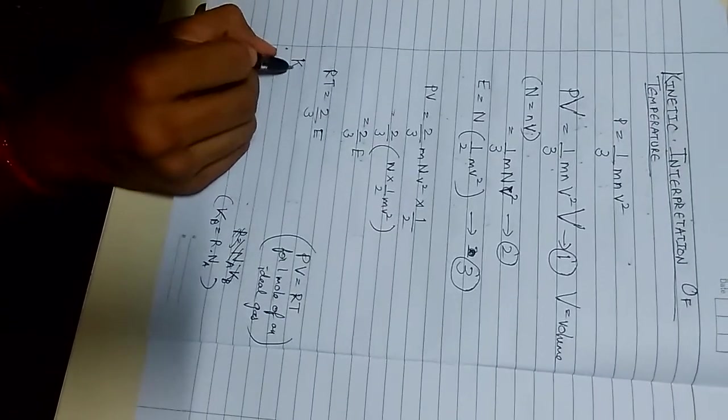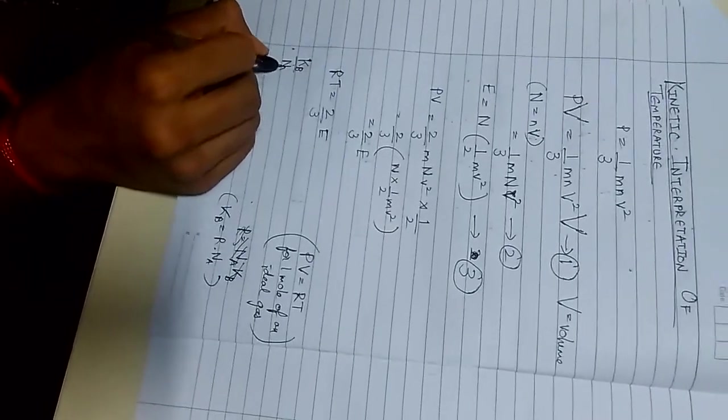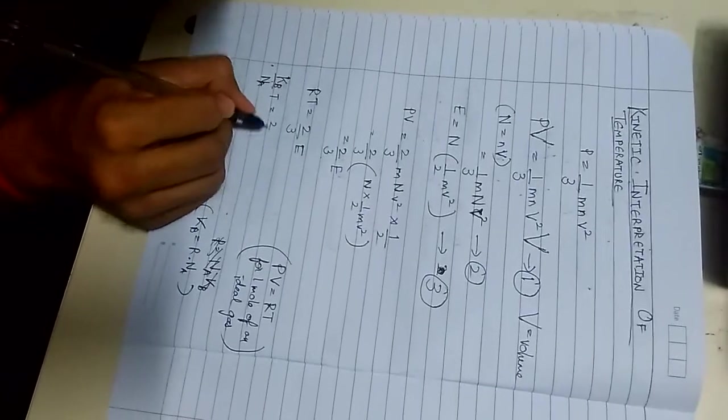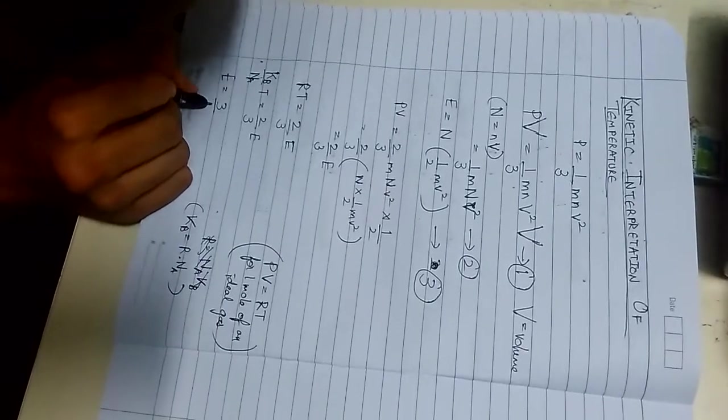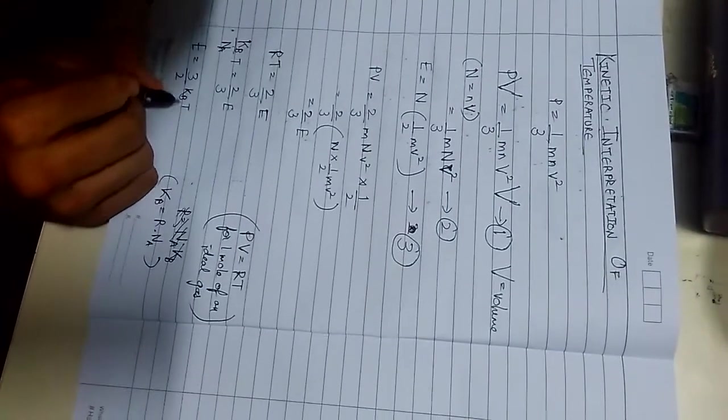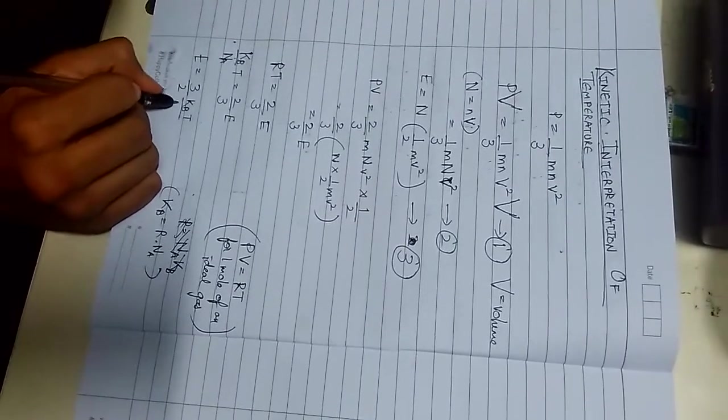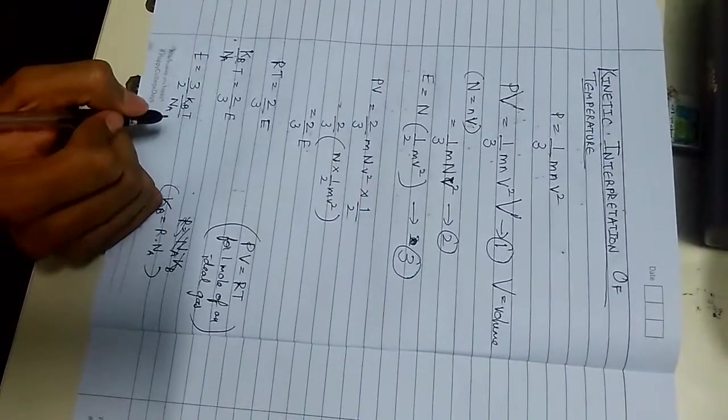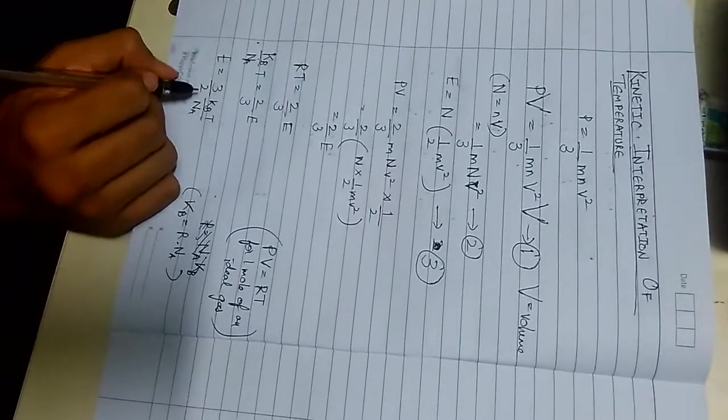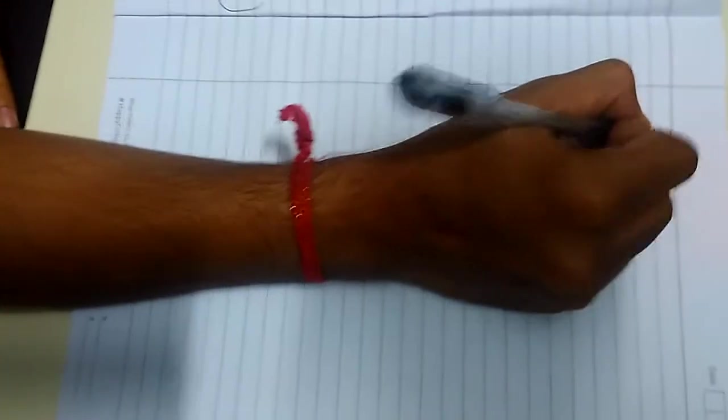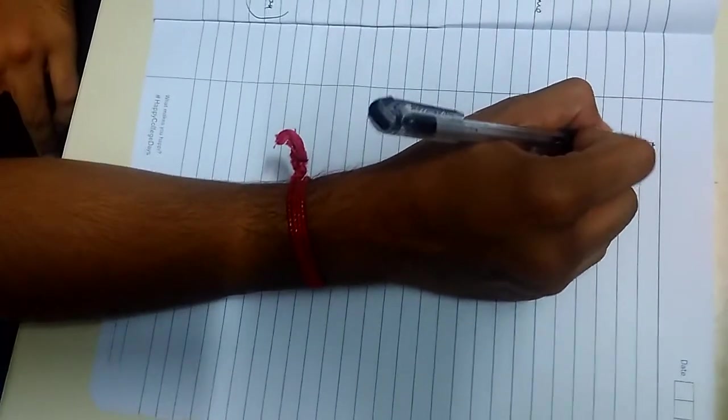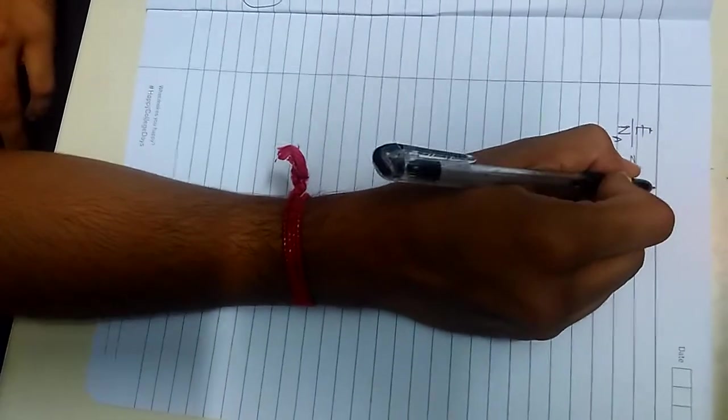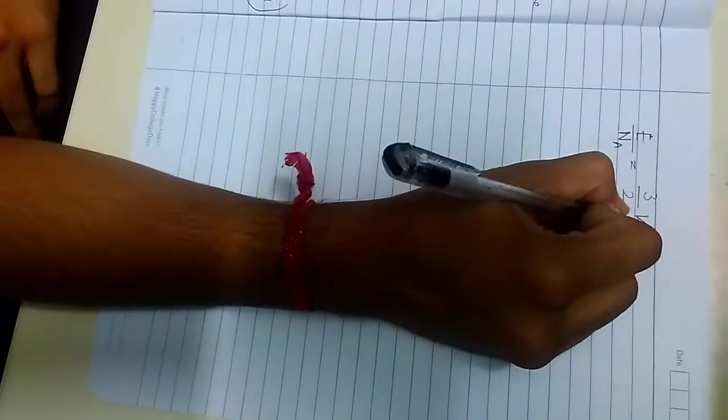So we can write kb by na t is equals to 2 by 3 e or e is equals to 3 by 2 kb t by na. We should always calculate the energy occupied by avogadro number of molecules which is 3 by 2 kb t.